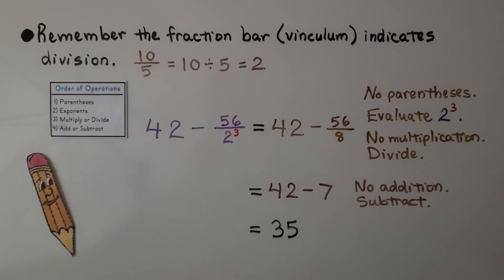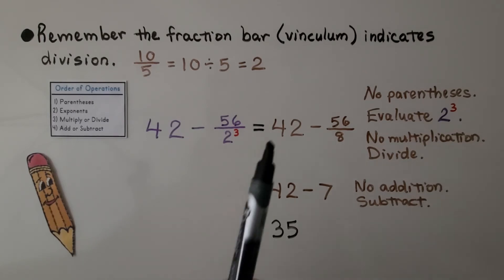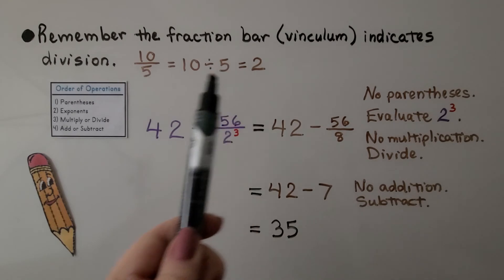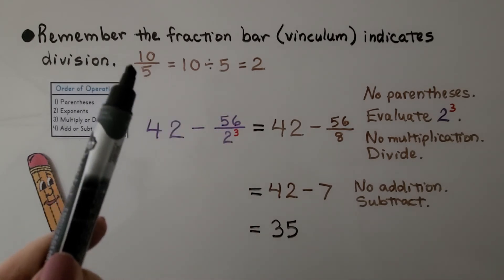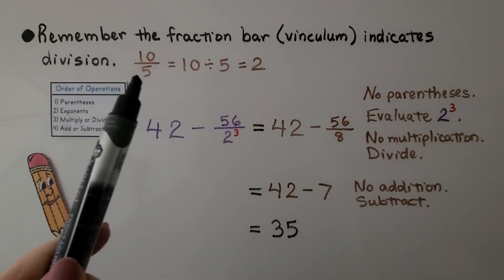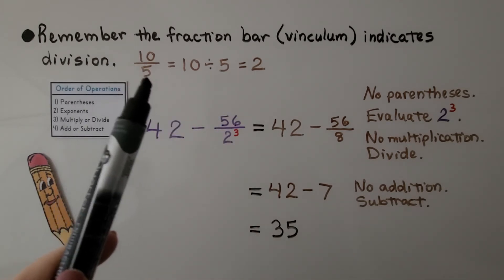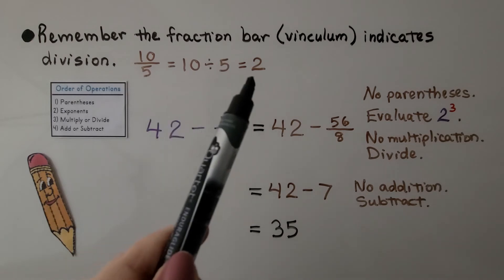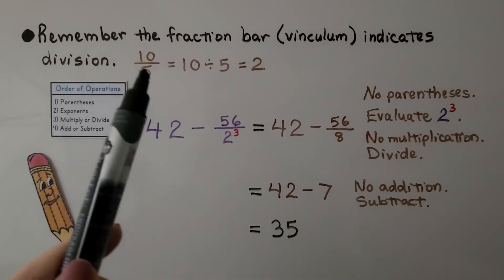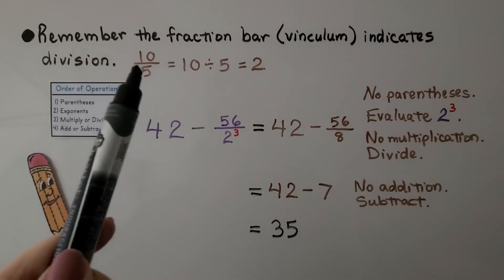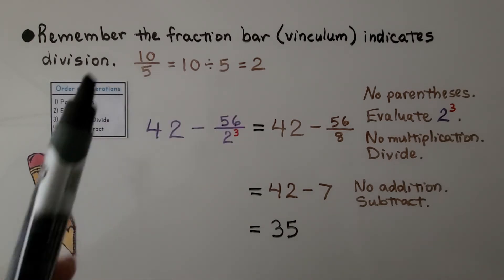Remember, the fraction bar indicates division — it is also called the vinculum. If we have 10 fifths, that means 10 divided by 5, which equals 2. The fraction bar indicates division.